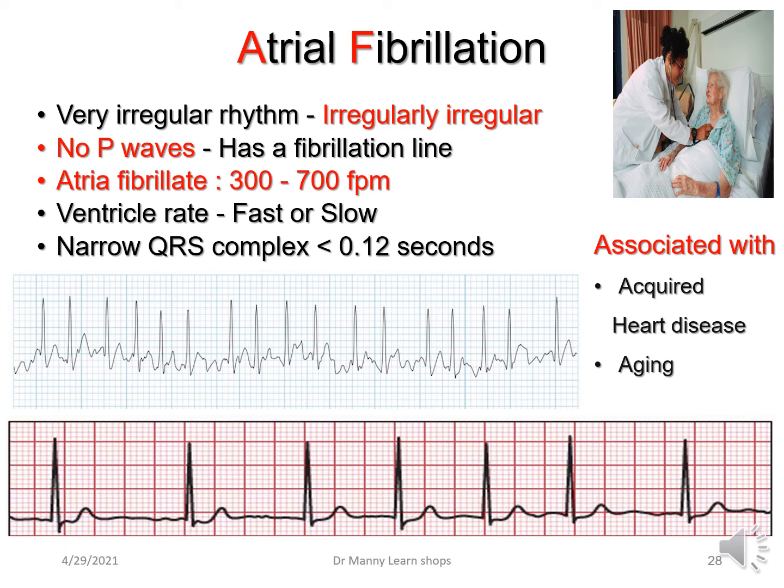In atrial fibrillation, this is a very, very irregular rhythm, often referred to as irregularly irregular. It has a fibrillatory line, which means there are no P-waves. The atria can fibrillate up to 300 to 700 fibrillations per minute, and the ventricles can respond either quickly, fast, or slow. The QRS complex is typically narrow, less than 0.12 seconds, and this is always associated with acquired heart disease.